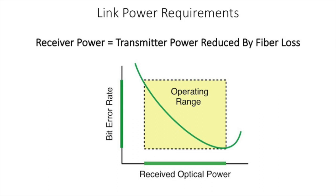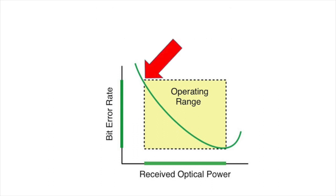Every fiber optic link has a requirement for the amount of power at the receiver. The receiver power is the transmitter power reduced by the loss in the fiber optic cable plant. And what's required is that you have enough power, but not too much. The minimum amount of power required is such that you have an adequate signal to noise ratio or a low enough bit error rate for the link to operate efficiently.